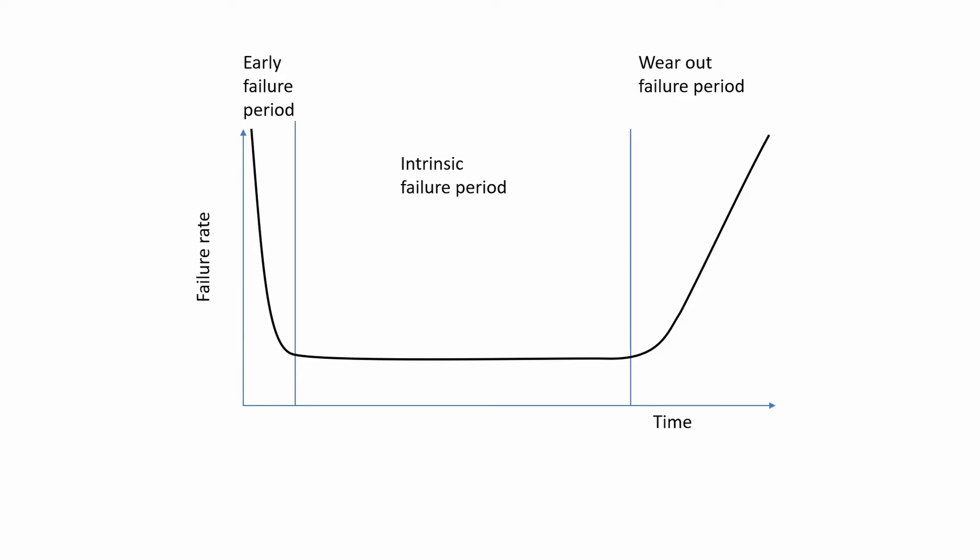In a batch of products, if one is going to fail it will most likely fail soon after it's put into use, the early failure period. Units that make it through that period are more likely to last through their entire expected lifetime until they start failing because they're worn out.